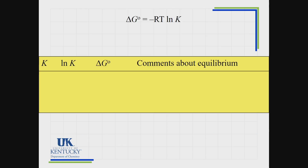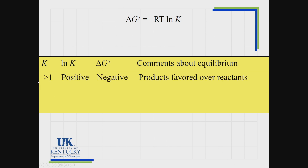Back to the equation: if K is greater than 1, products are favored over reactants, and delta G is negative. The middle part gives us the sign information. If K is greater than 1, the natural log of K is positive. Temperature is always positive, R is always positive, and then we change the sign, giving a negative delta G value. We see that playing out mathematically with the equation.